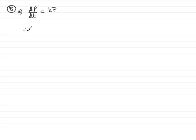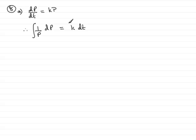If I do that, what we'll have is 1 over p dp equals k dt, and I need to integrate both sides. Rearranging this gives this situation.